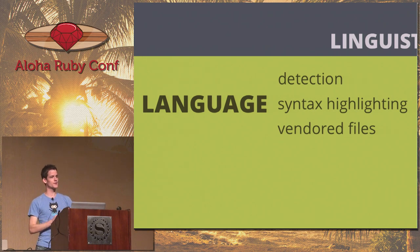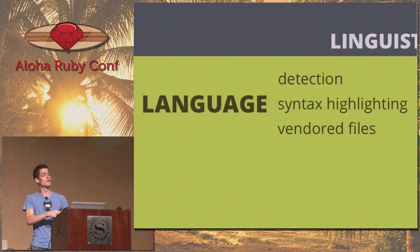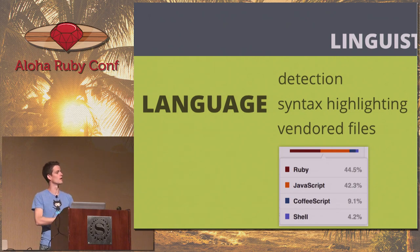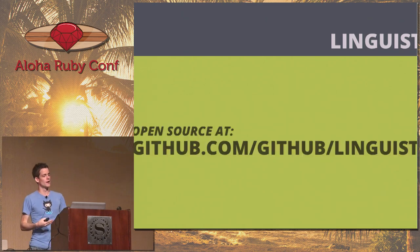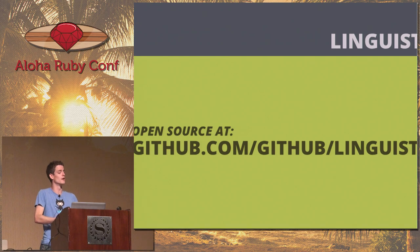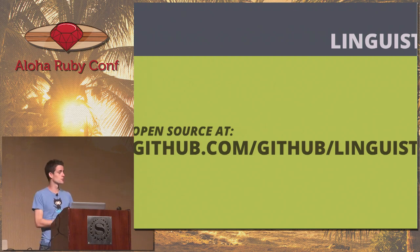Linguist is our open source project to handle all language-specific stuff on GitHub — anything involving detection of a repository, syntax highlighting, vendored files. All of those things are ways Linguist determines what language a file is in. This generates the language graph on your repositories. It's also good to check out if you want to run it yourself. If we're misclassifying your project — thinking something is Ruby when it's something else — this is where you go to help make us better.